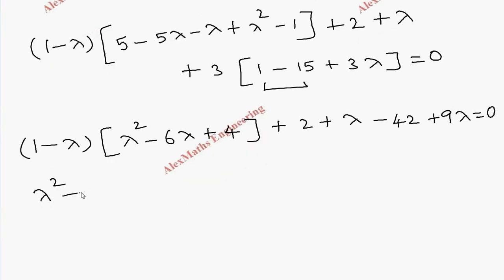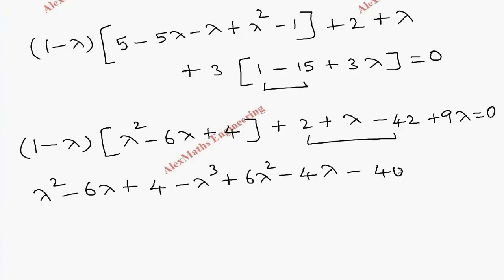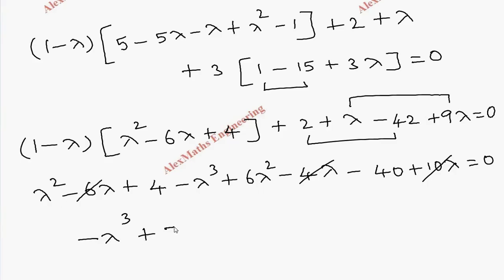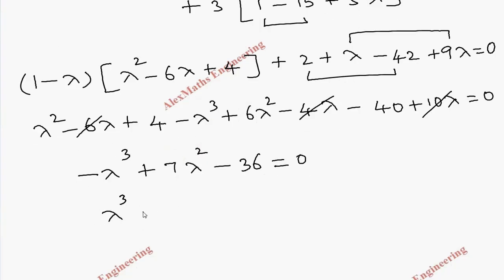Expanding and grouping all terms: lambda squared minus 6 lambda plus 4, combined with the remaining terms, gives minus lambda cubed plus 2 lambda squared, and lambda terms cancel, leaving minus 36. Changing sign throughout gives the characteristic equation: lambda cubed minus 7 lambda squared plus 36 equals 0.